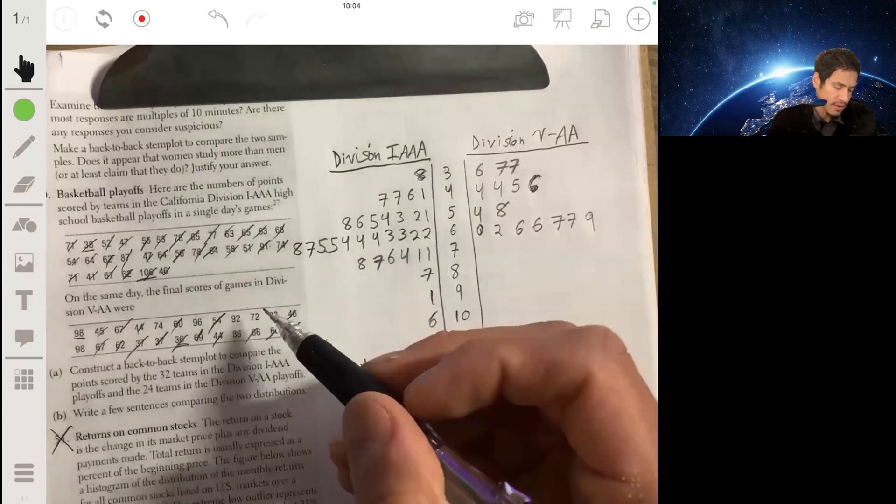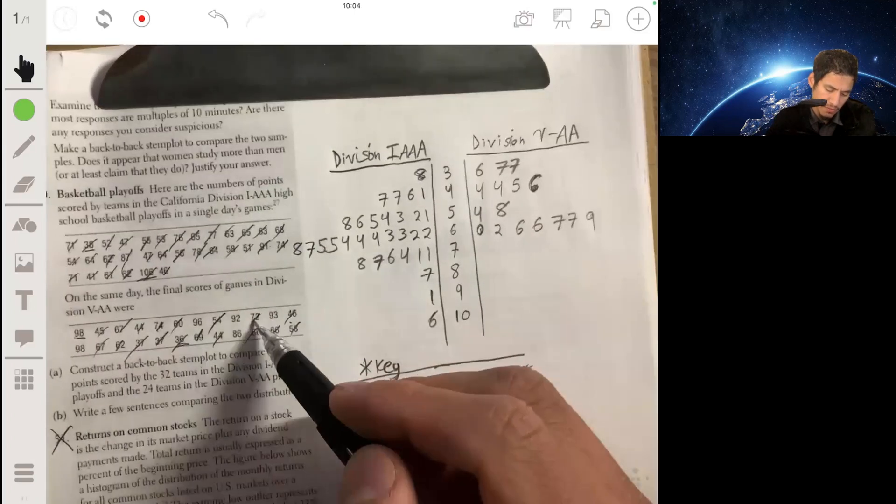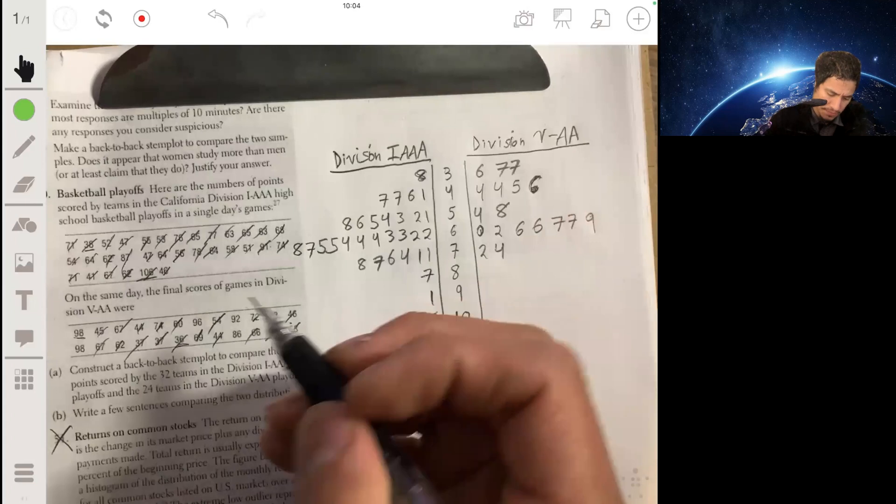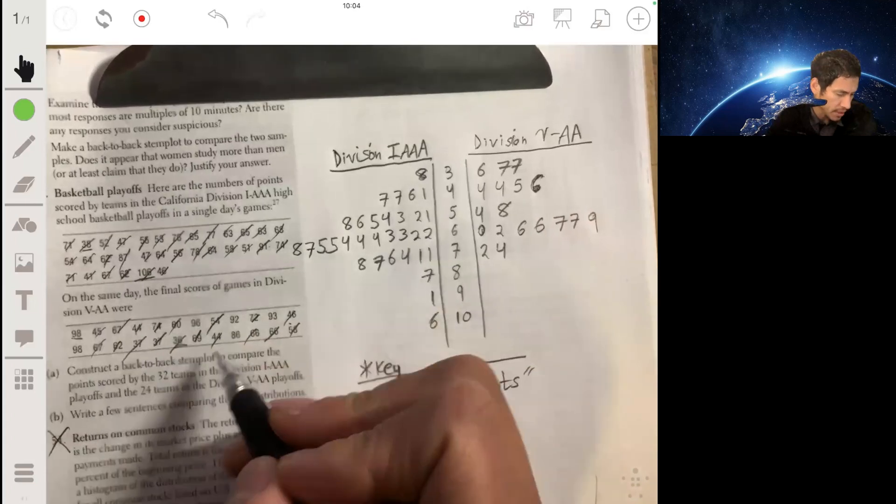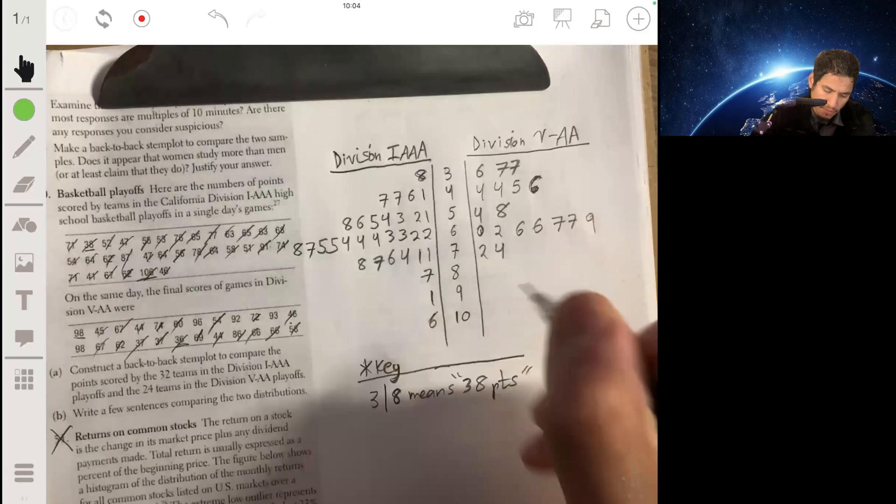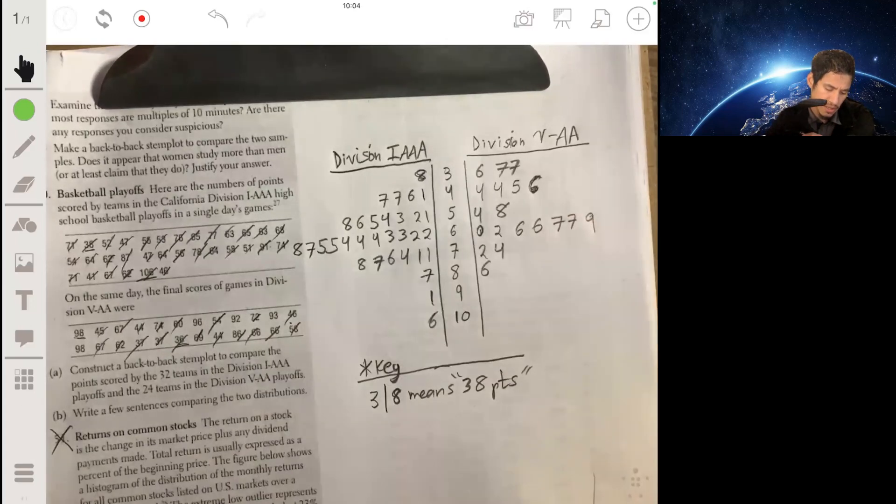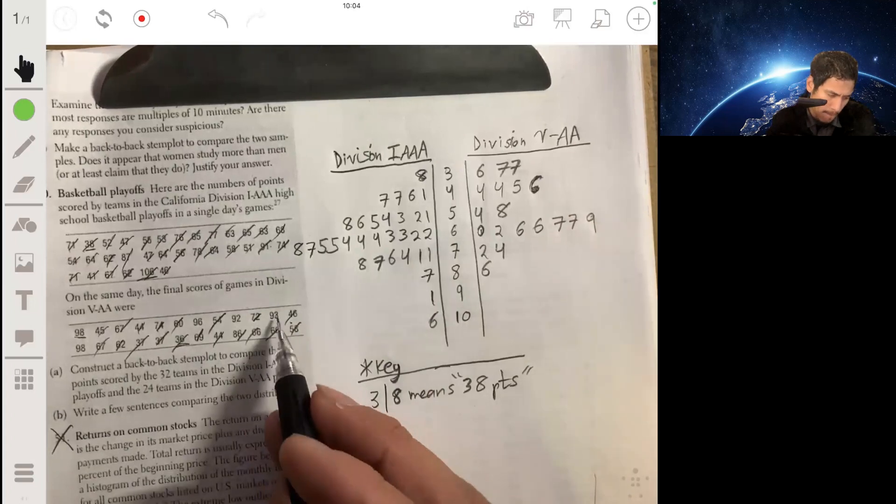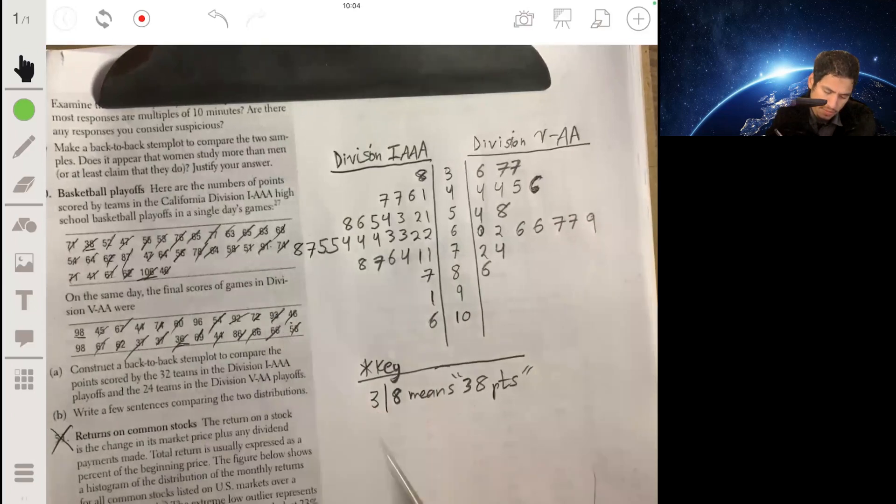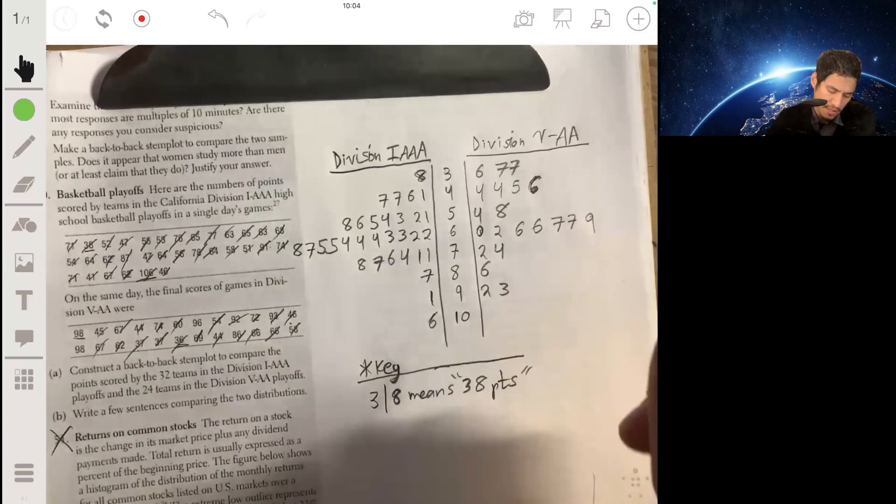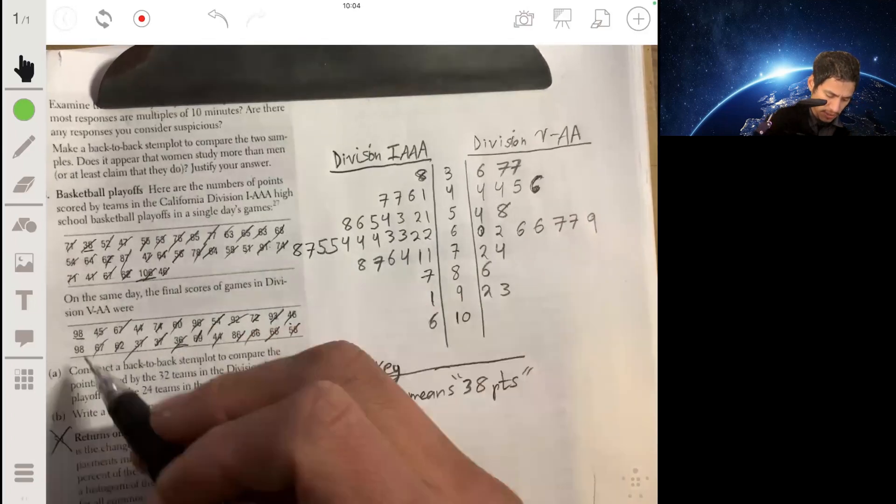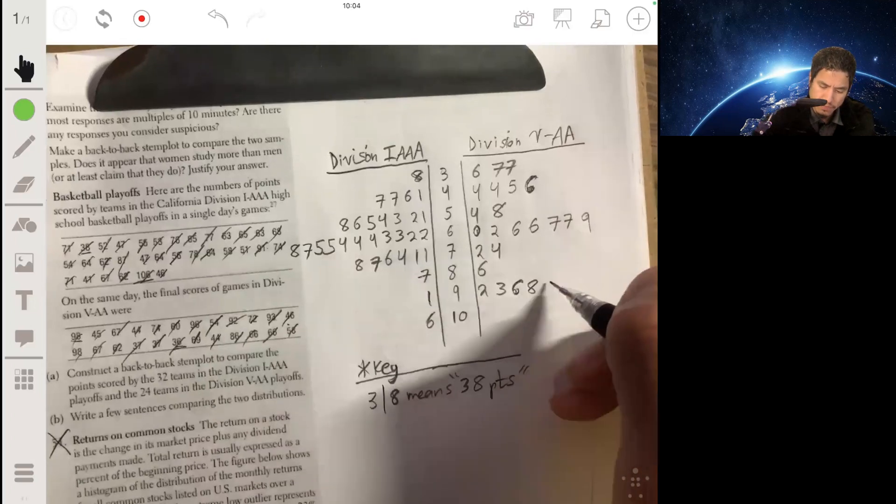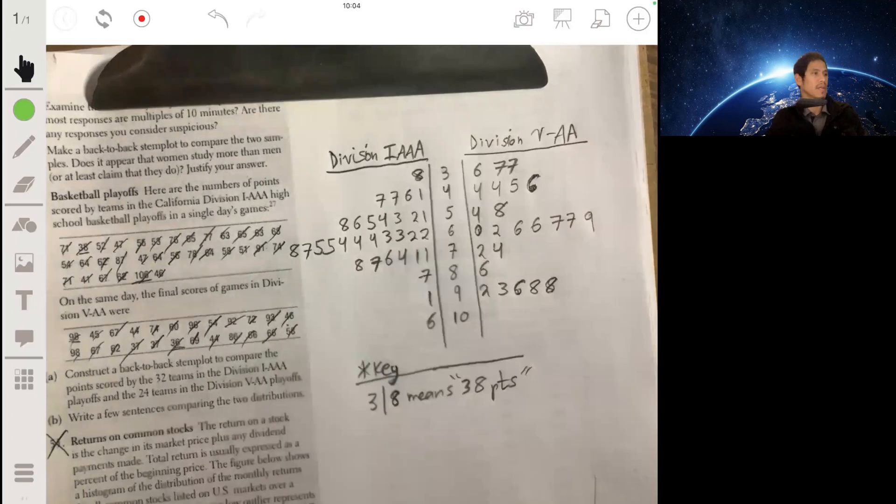About that guy. And then 70s: we have 72, 74, 86. And then we also have 90s: 92, 93, 96, and then 98. That's it for that one.